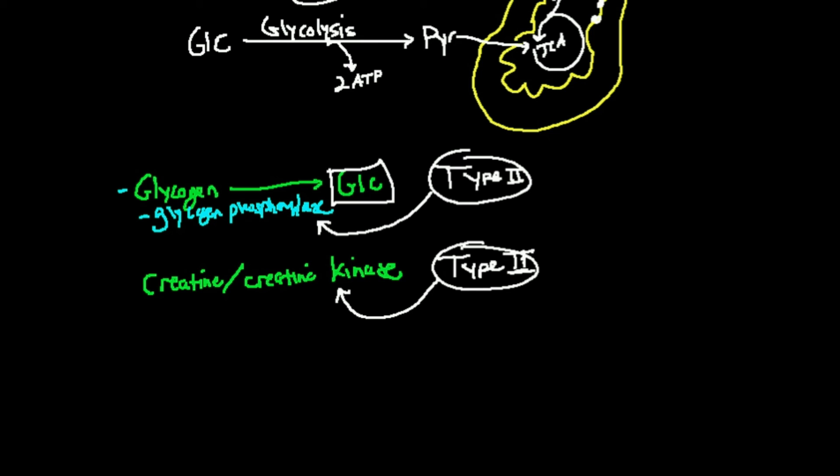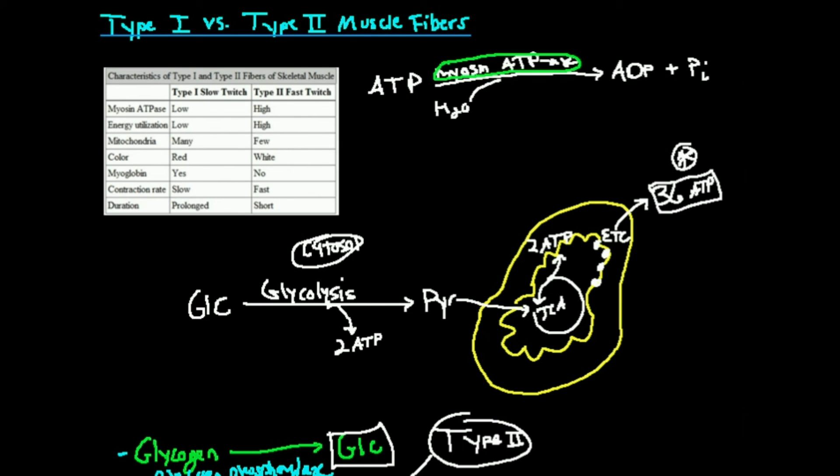As a result of this, the fact that type 2 rely more on glucose and glycolytic metabolism and this phosphagen system, they're termed glycolytic fibers. So, sometimes instead of fast twitch, they'll be referred to as fast glycolytic muscle fibers. So, they're type 2, they're fast twitch, or glycolytic fibers.